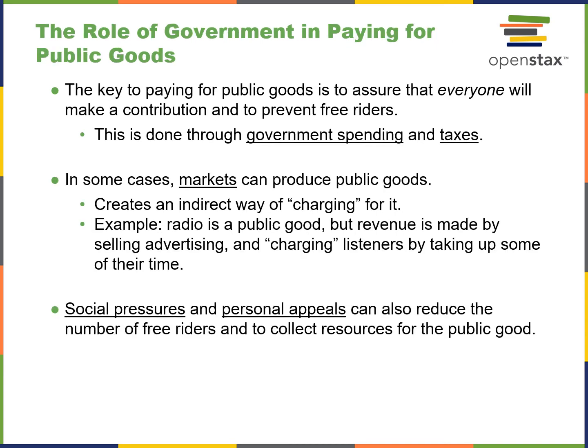The role of government in paying for public goods is to ensure everyone makes a contribution and to prevent free riders. This is done through government spending and taxes. In some cases, markets can produce public goods and create an indirect way of charging for them — radio is a public good with revenues made by selling advertising and charging listeners by taking up their time. Social pressures and personal appeals can also reduce the number of free riders and help collect resources for the public good.